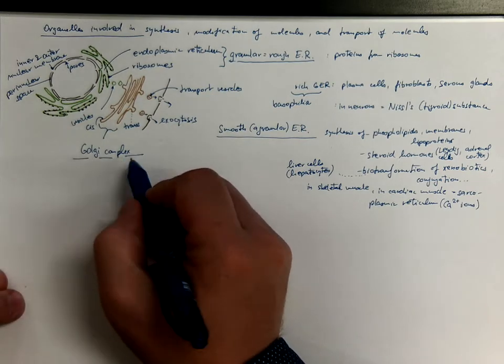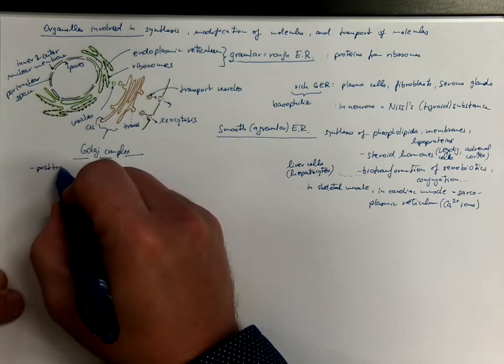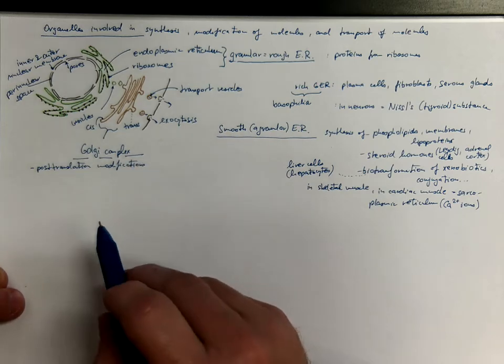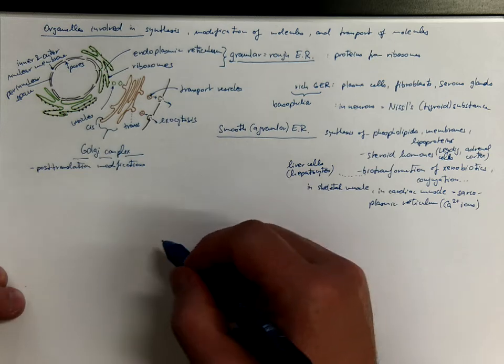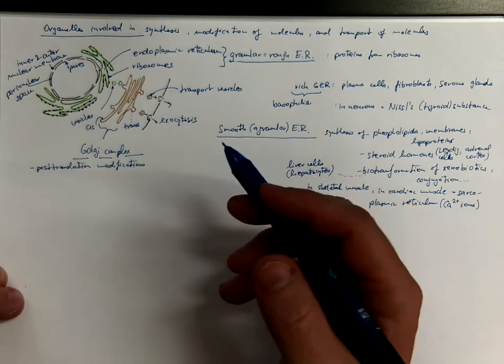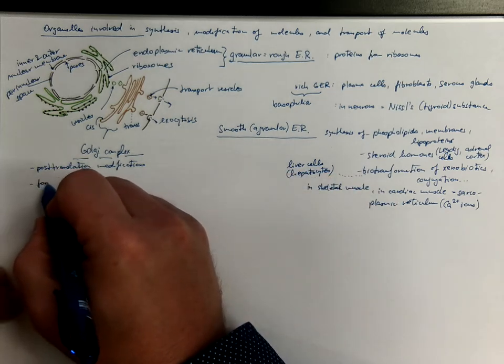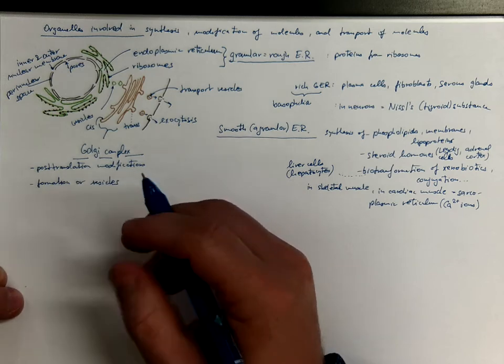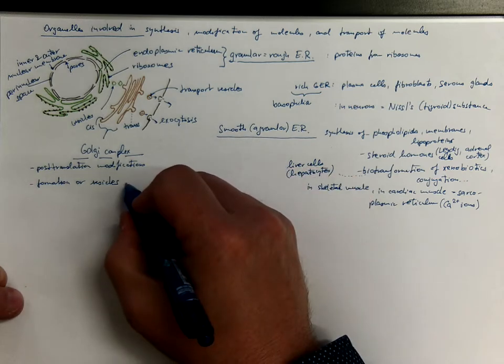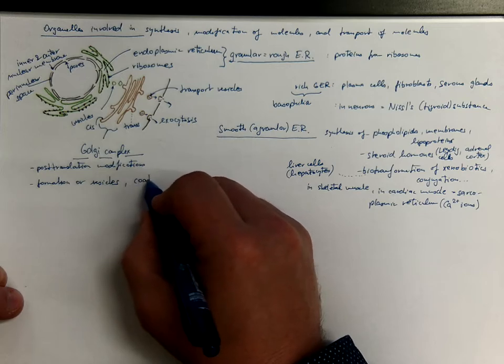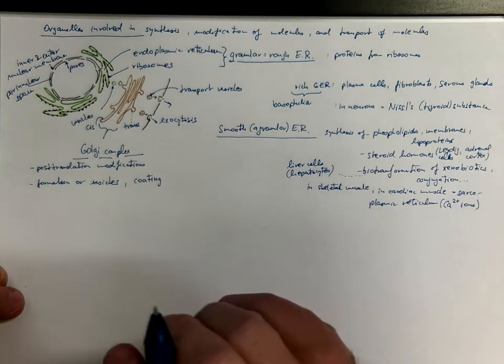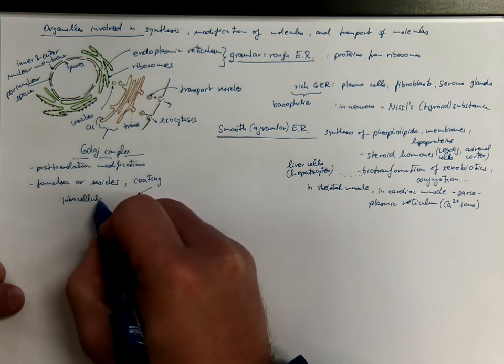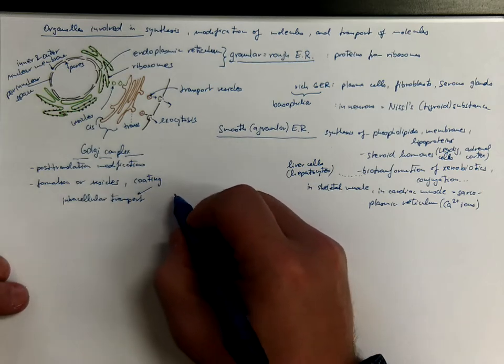Let's discuss the contribution of the Golgi complex. That's where some post-translational modifications occur because most of the newly formed proteins need to be modified somehow like glycosylation, sulfation, partial proteolysis, etc. Also there is formation of vesicles and the vesicles are getting some special addressing molecules and the formation of vesicles is also called coating because there are coats made of various molecules. And the vesicles could be either intended for intracellular transport or for exocytosis.